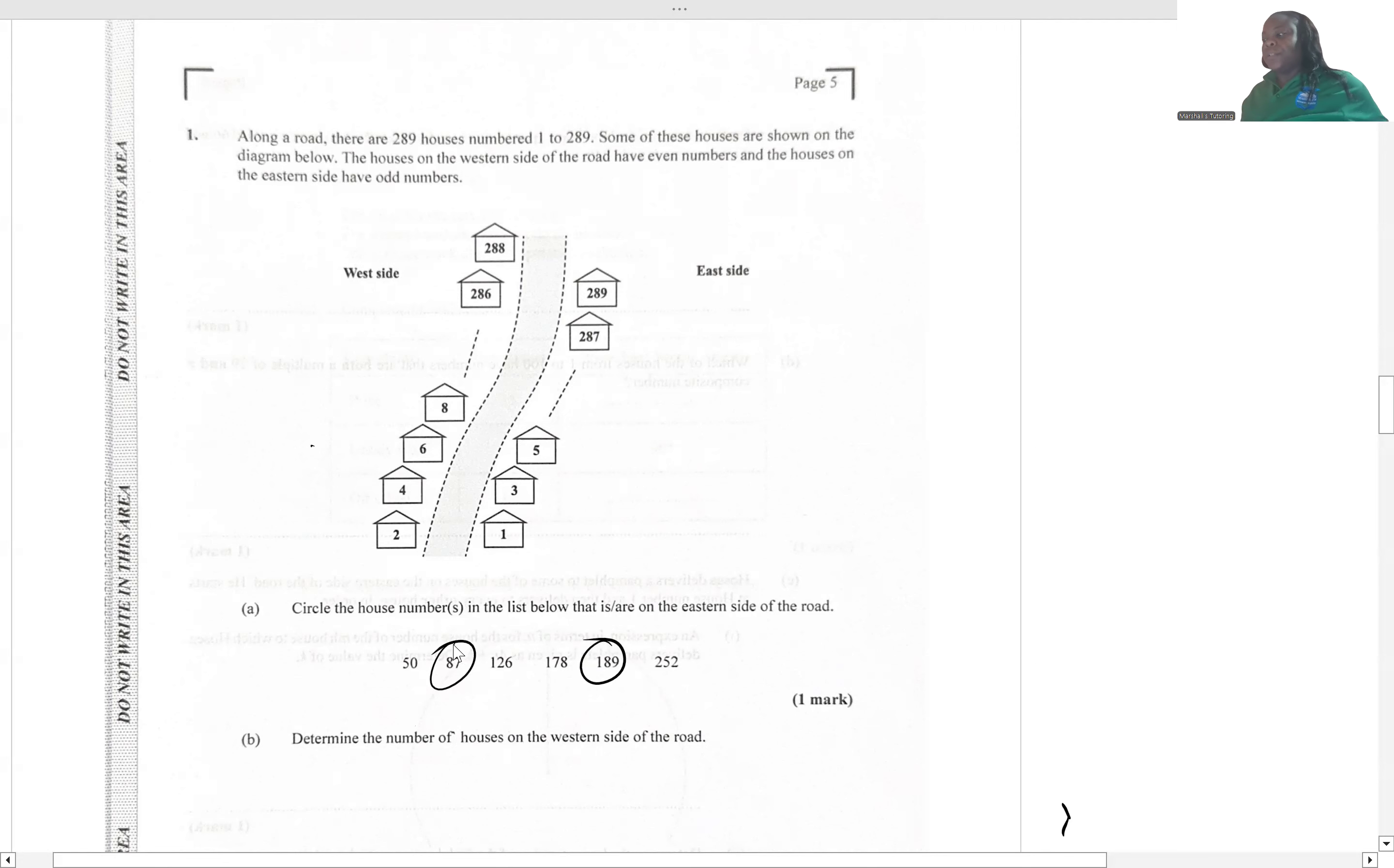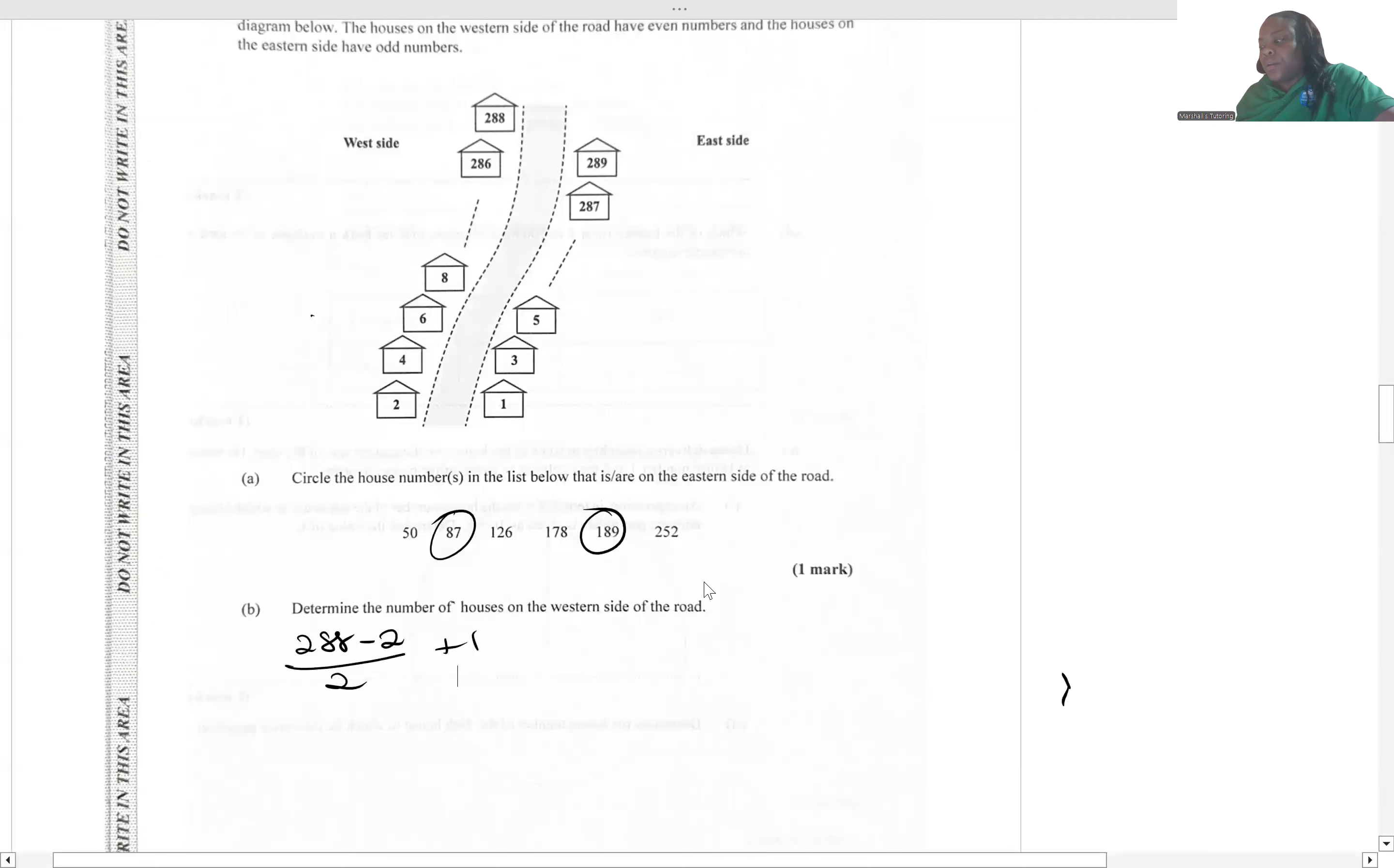Determine the number of houses on the western side of the road. They want us to determine the integers from one integer to another. The formula we usually use is the upper minus the lower and we add one. In this case, we have one additional thing to do because we notice that we are skipping an integer every time, or counting in twos. We have to see the upper integer, which is 288 minus the lower, which is 2, and we're going to divide that by 2, and then we are going to add one.